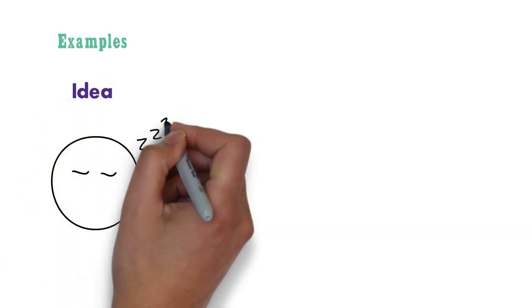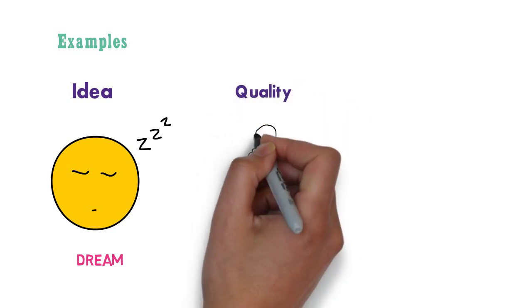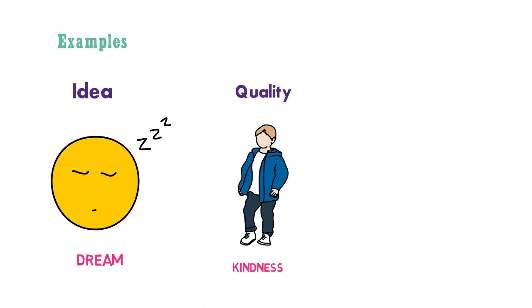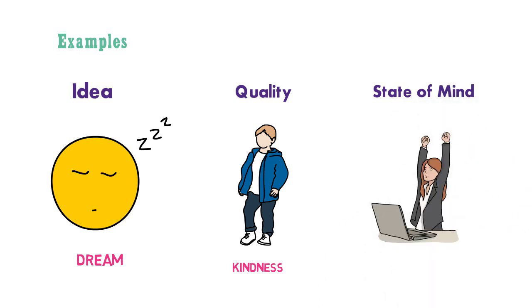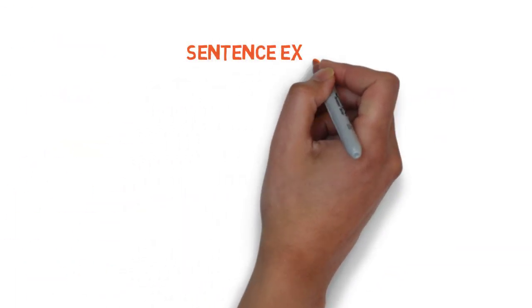Let me give you examples of each. Idea: when you are sleeping and any dream comes to your mind — that's an abstract term. You cannot see, smell, hear, taste, or touch your dream; you just have an imagination. Quality: you might have the quality of being very kind. It denotes that you are a very good person, but you cannot use your five senses for understanding that. State: it defines your state of mind. Here in the image the girl seems very happy, but you cannot use your five senses to get the state of the girl. Basically, they are feelings that any person has.